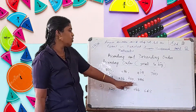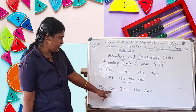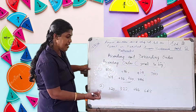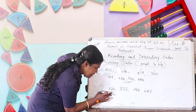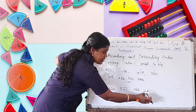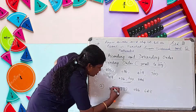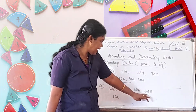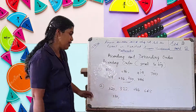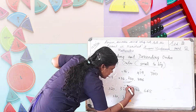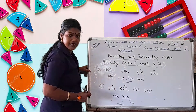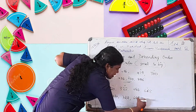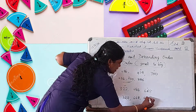Now the next question. The numbers are 320, 322, 686, and 668. The smallest is 320, then 322. Then from 686 and 668, the smaller is 668, and the last number is 686. So the ascending order is 320, 322, 668, and 686.